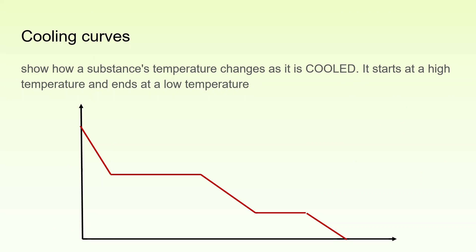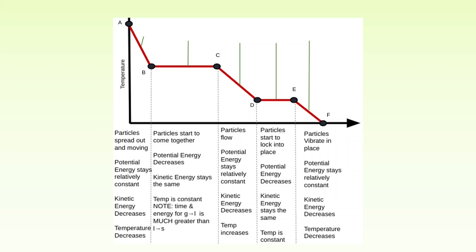Cooling curves look almost the same except exactly the opposite — they show how a substance's temperature changes as it's cooled. How do we know it's a cooling curve? We start at a high temperature and end at a lower temperature. In the first section, we start off with a gas where the particles are really spread out and moving. Potential energy is relatively constant as it cools off. Kinetic energy decreases and the temperature decreases.